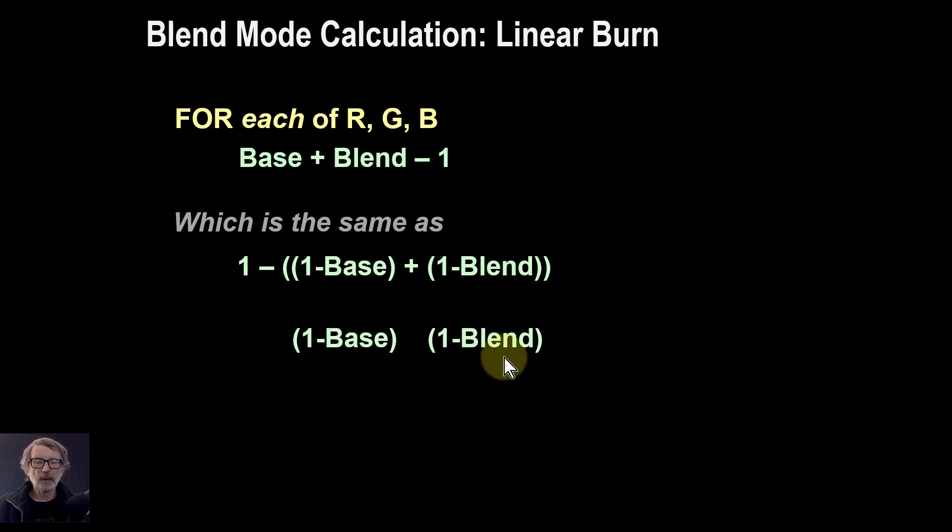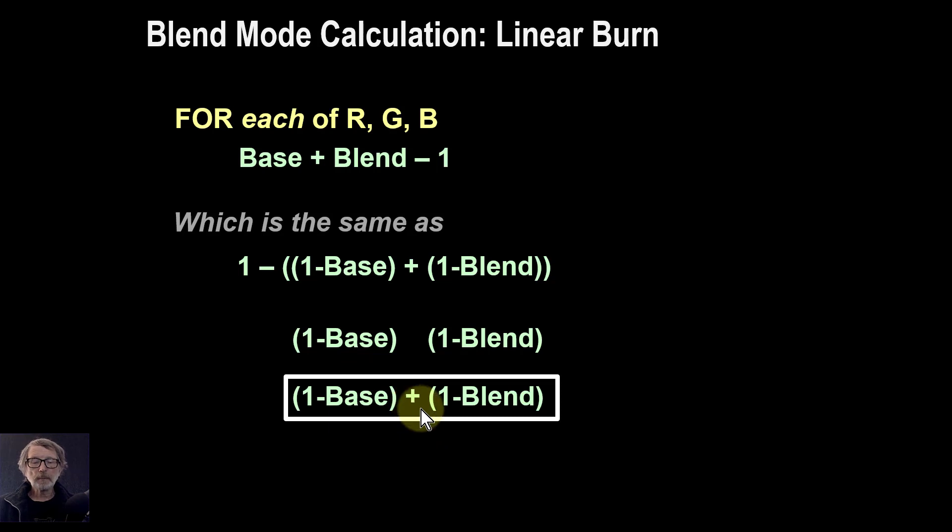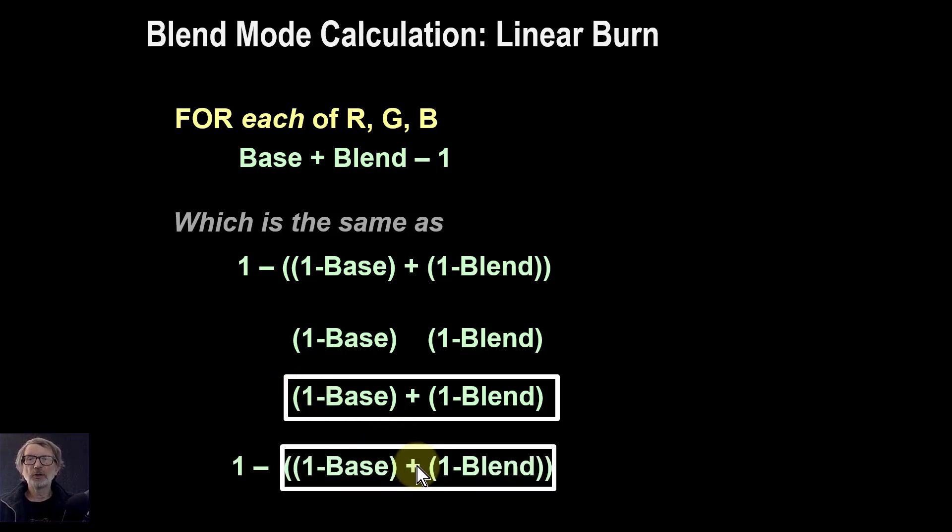So you take those one minuses, and when you've got one minus a value here, you're effectively creating a photographic negative. It's not the same as a mathematical negative, which is inverted, but this is one minus. So it turns it effectively backwards and creates a negative. In other words, you take the positives of the base and blend, and you turn them into negatives. And then you add them up. And you've then got two negatives combined, which is another negative. And you want to get back to a positive, so you take it away from one again, which returns you to a positive.